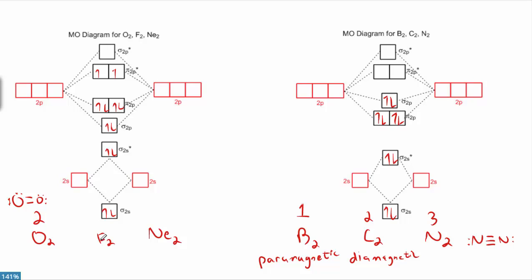Moving on to F2: fluorine's got seven valence electrons, so diatomic fluorine would have 14 electrons to fill in — we'd have to add two more antibonding electrons. We've got eight bonding and six antibonding — eight minus six is two, divided by two gives a bond order of one. The structure for F2 is indeed a single bond between the fluorines. MO theory is corresponding with Lewis dot structure theory in terms of bond order and number of bonds quite well.